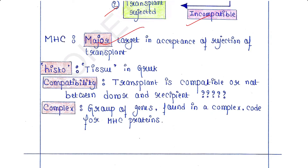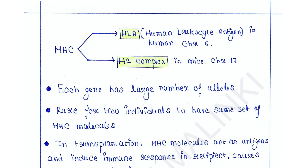In Greek, 'histo' means tissue. The second and third words — histo-compatibility — represent whether the transplant tissue is compatible or not between donor and recipient. The last word is 'complex': a group of genes found in a complex of a particular DNA code for MHC proteins, hence the word 'complex'.